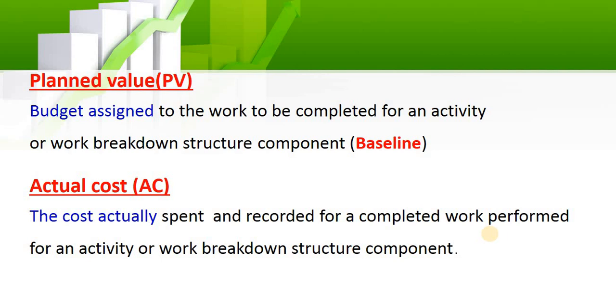Actual cost is the cost that you have already spent on the project — for labor, non-labor, material, and salaries. This is the actual expenditure of your project.